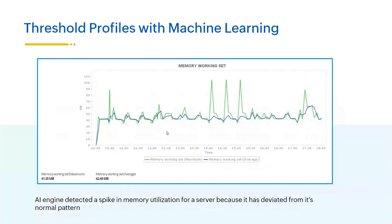Another area where ML helps is with threshold profiles. Applications Manager currently supports static, adaptive, and anomaly threshold profiles. Say you have a Tomcat server where you want to monitor memory utilization. Instead of configuring a static threshold, if you choose an adaptive one, when the current memory utilization deviates from the usual pattern, an alert will be automatically triggered.